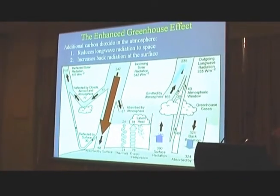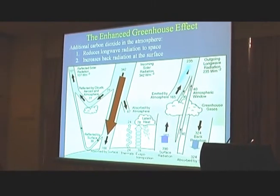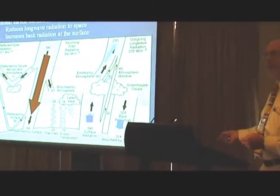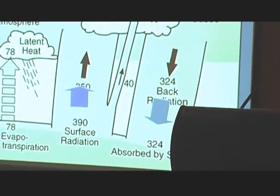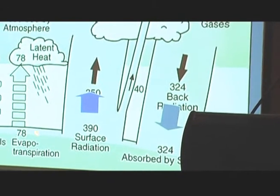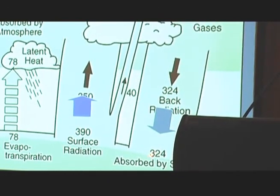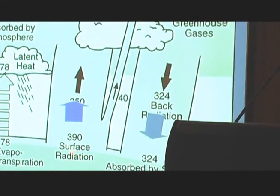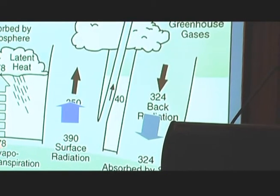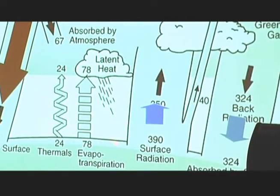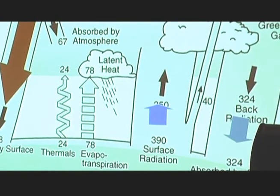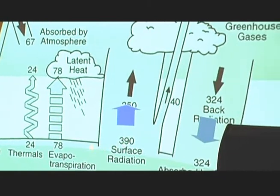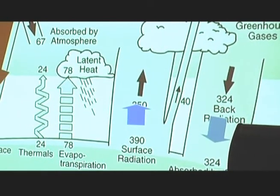However, increased carbon dioxide also increases the back radiation of the surface. There's 324 watts per square metre, which is increased slightly, and it has a direct impact on the surface energy budget. By increasing the back radiation, you must raise the temperature a little bit. And by raising the temperature, you increase the surface emission and you also increase the effect of transpiration. So this is really the area that we need to focus on, because this is where carbon dioxide in the atmosphere really impacts upon the climate.